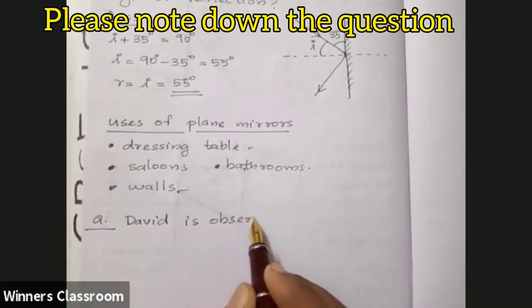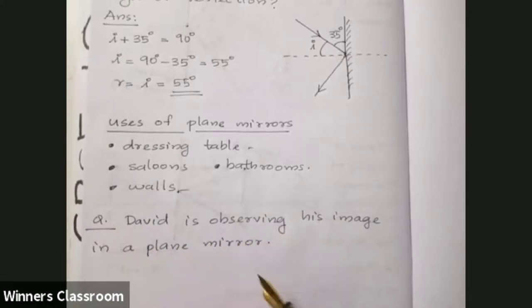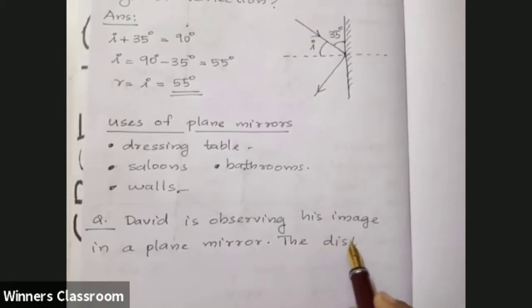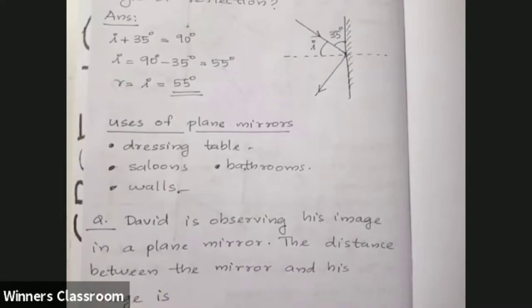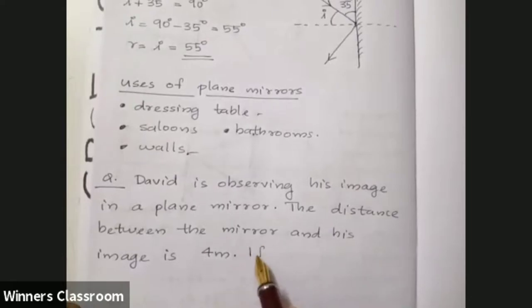David is observing his image in a plane mirror. The distance between the mirror and his image is 4 meters. If he moves 1 meter towards the mirror, then what is the distance between David and his image?